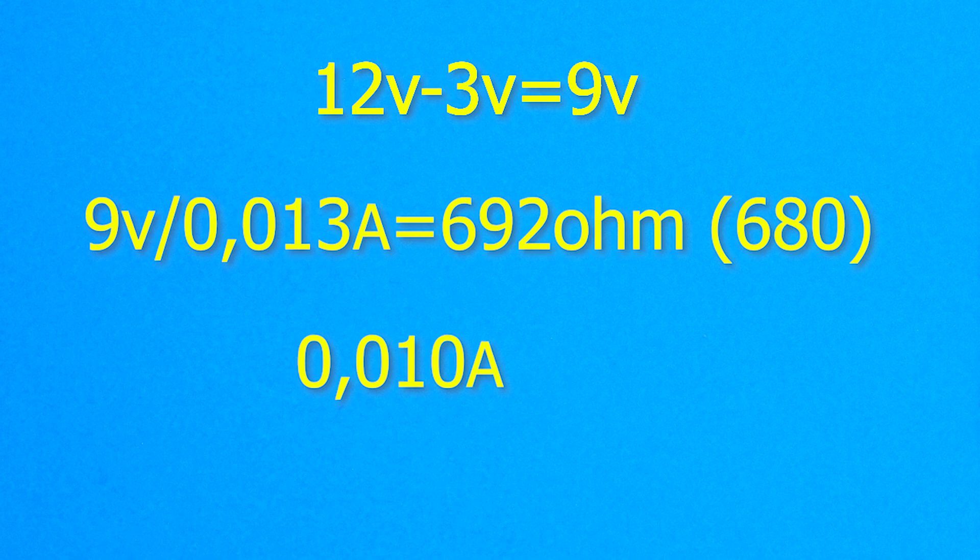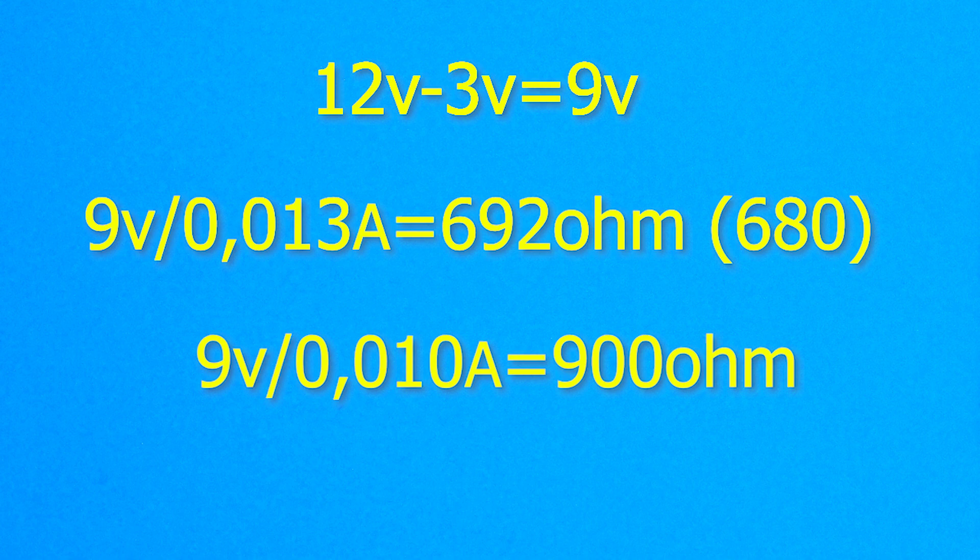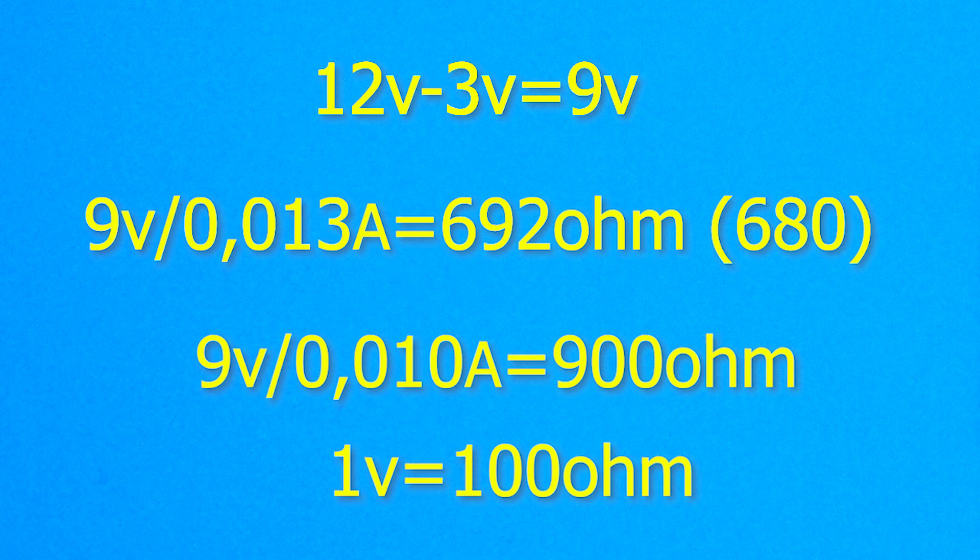In my work, I usually take the current of the LED as 10 milliamps. The brightness of the LED does not change from this, but the calculations are much easier to make. To extinguish 9 volts, you need a 900 ohm resistor. And to extinguish 1 volt, you need 100 ohms.